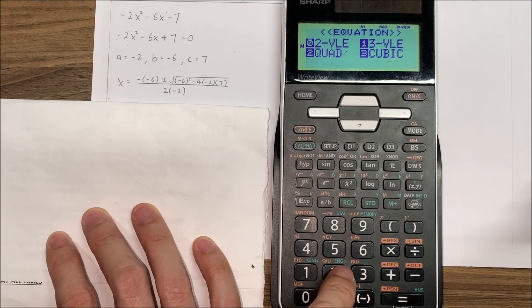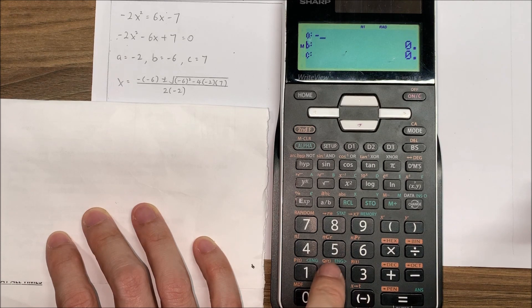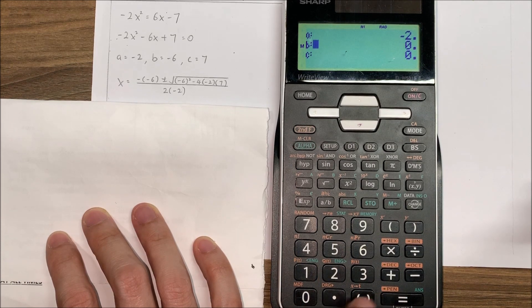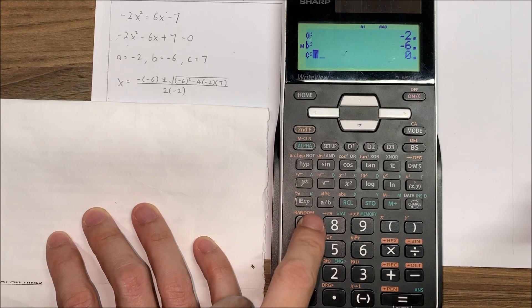In this case, equation 2 and 2 again. And since a is negative 2, so negative 2, negative 6, and then 7.